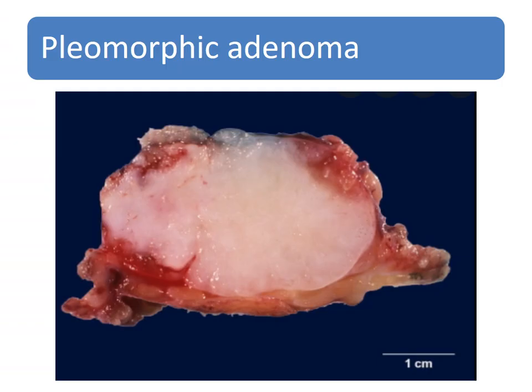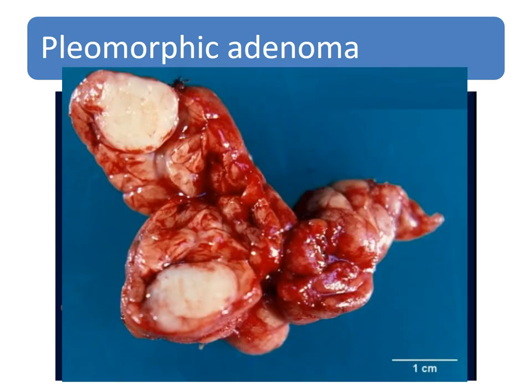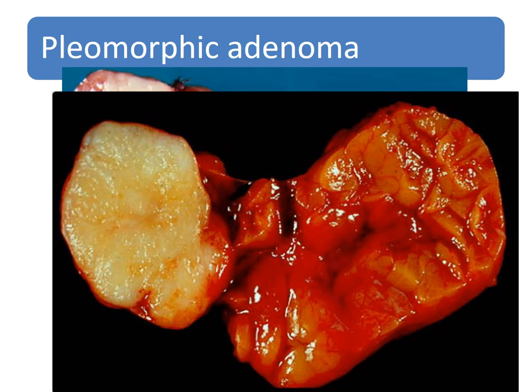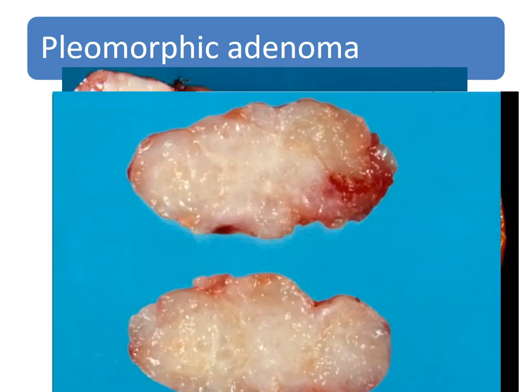At closer view: there are ductal cells and myoepithelial cells. Myoepithelial cells are elongated and ductal cells are low cuboidal to flattened in appearance, with chondromyxoid stroma that looks like cartilage. Here you can see another photograph of pleomorphic adenoma showing a well-circumscribed homogeneous glistening cut surface surrounded by normal tissue, with a yellowish-white to white glistening cut surface.